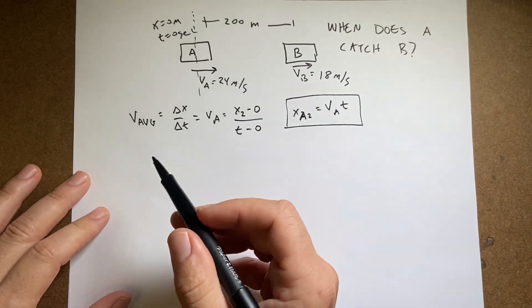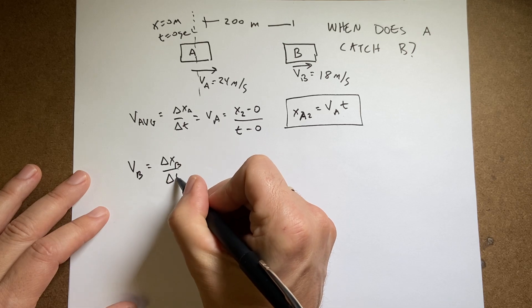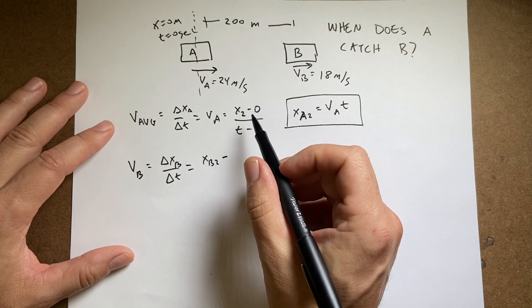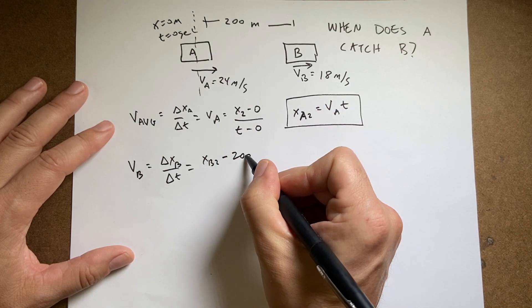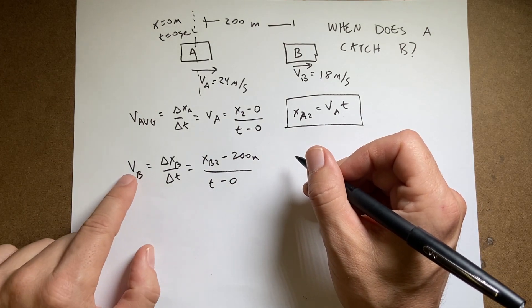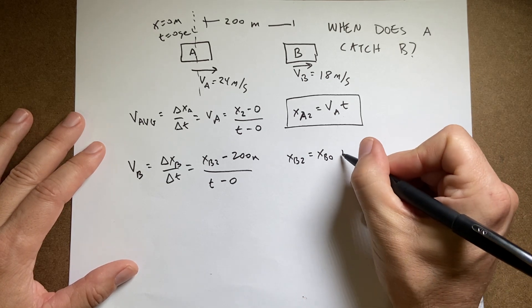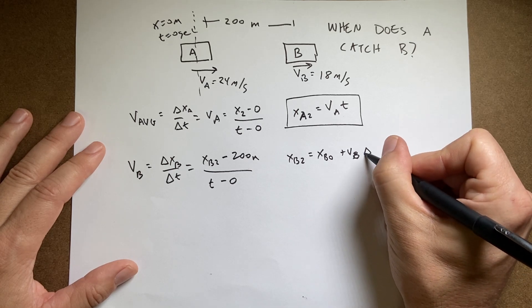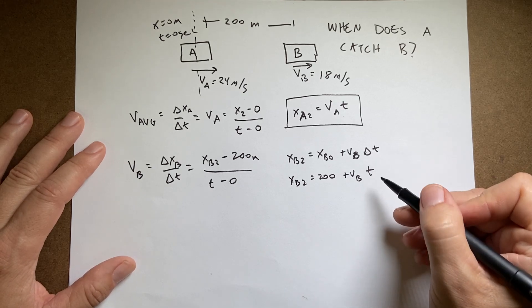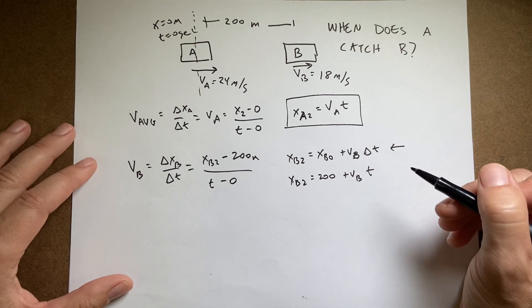Now let's do the same thing for car B. So here I have VB is delta xB over delta t. It's going to start at t equals zero, but it does not start at x equals zero. So xB2 minus the initial position, which is 200 meters, over t minus zero. So now let's solve this for the final position. And I get multiply both sides by t, and I add 200, I get xB2 equals xB0 plus VB delta t. So in this particular case, I'd be xB2 equals 200 plus VBt. And the difference between t and delta t is that this is true if the initial time is zero. So now I have this function.